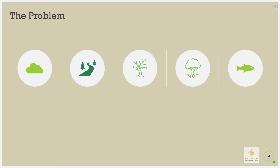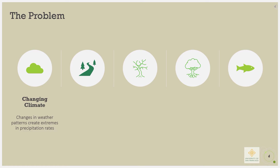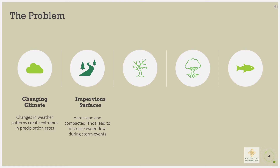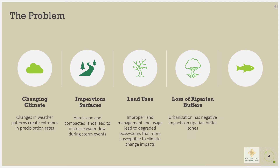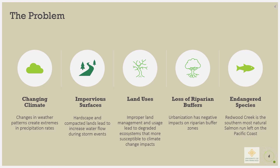The Redwood Creek Watershed faces an uncertain future. Climate change is affecting weather patterns, which create extremes in precipitation. Impervious surfaces lead to unnaturally high water flow rates during storm events. Historically improper land management has led to degraded ecosystems more susceptible to climate change impacts. Urban development has negatively affected unrestored riparian buffer zones to the point of collapse. This all culminates in a highly stressed environment for the biotic community that relies on Redwood Creek, most notably endangered and threatened salmonid species that spawn within the creek itself.